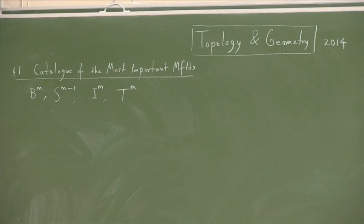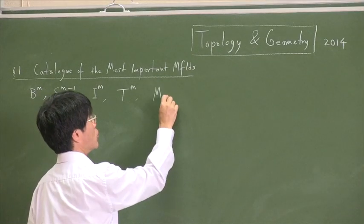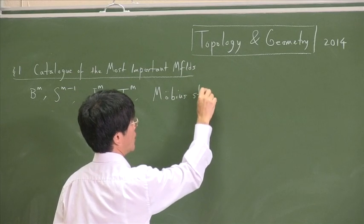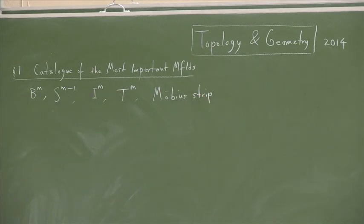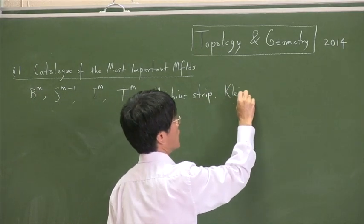And we also had torii. Torus, plural, which is torii. T squared is the standard two-dimensional surface of a donut. Also, my initials, Tadashi Tokieda. And also, we had the famous Möbius strip. It can be twisted any number of times, and cut it along the center, you get different results.